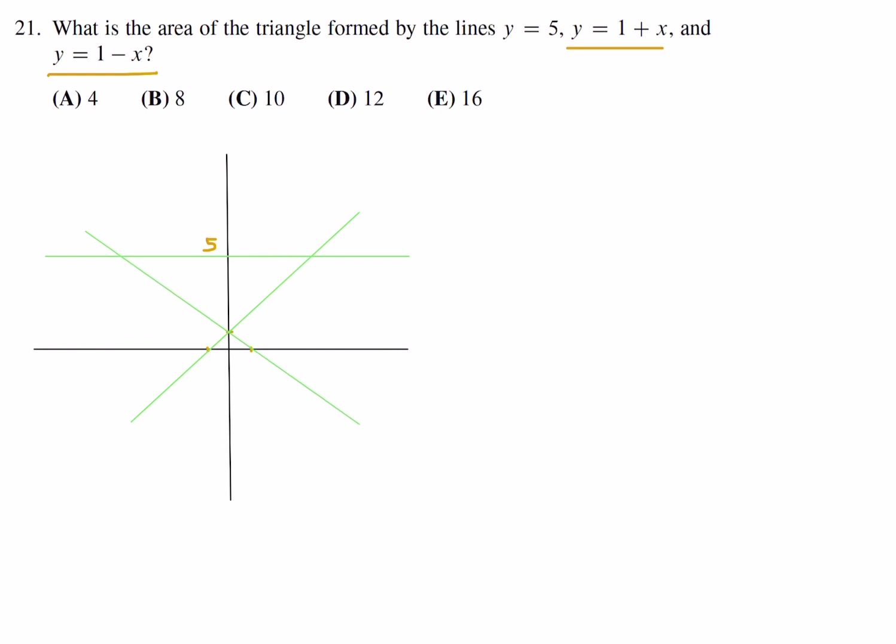So now the triangle that they want us to figure out the area of is this guy right here. That should be pretty straightforward, that's the base and this is the height. Well it would be helpful if I can get these two points, and that won't be much of a problem. And then this point right here we know is 1, so this is going to be 4 in terms of that distance.